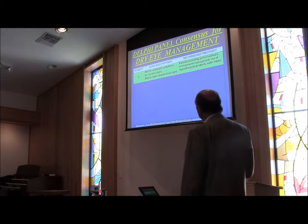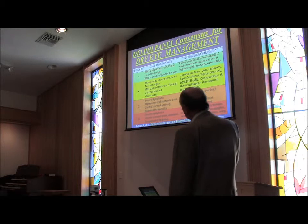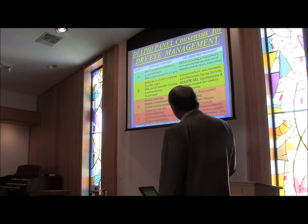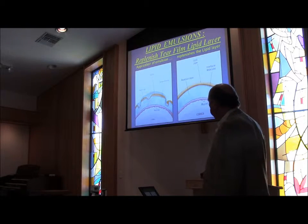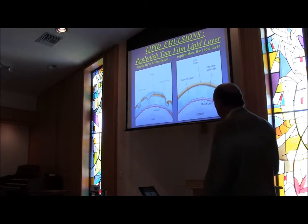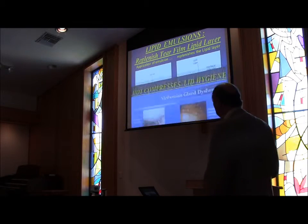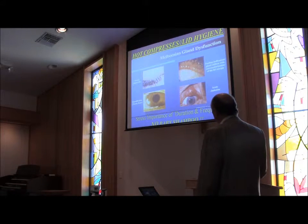There's a panel that categorizes dry eye from mild to moderate and recommends treatments accordingly. In most cases — about 75% of the time — we need to improve the lipid layer so the whole tear film becomes stable. Because if the lipid layer falls apart, everything underneath it falls apart. One approach is hot compresses and lid hygiene for chronic blepharitis or chronic meibomianitis.